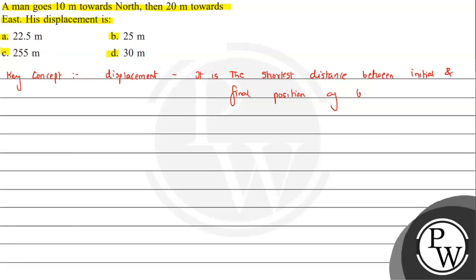Let's try to understand this with the help of the question given. Here we have a body. Let's first define directions - this is the north direction, this is south, this is east, and this is west.